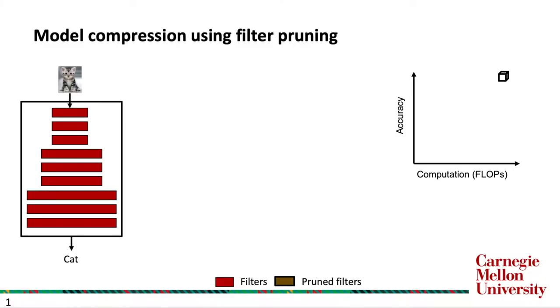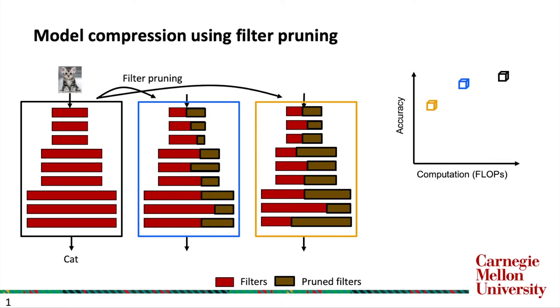We consider model compression using filter pruning. On the left-hand side, we have a nine-layer pre-trained convolutional network with grab boxes representing convolutional filters. Filter pruning is a method that prunes away filters to arrive at smaller models that have less floating-point operations or flops without losing too much accuracy.